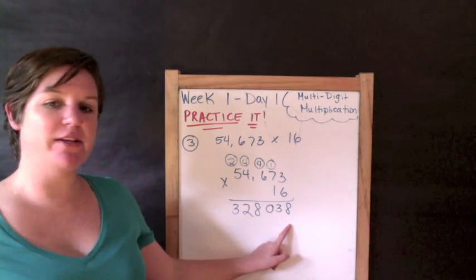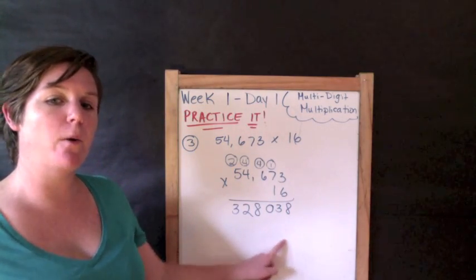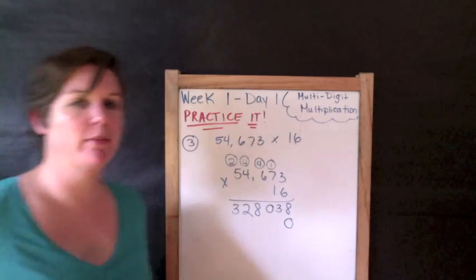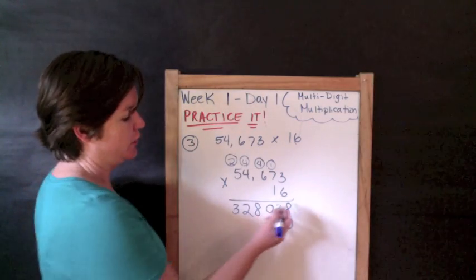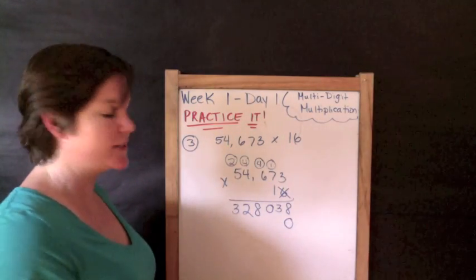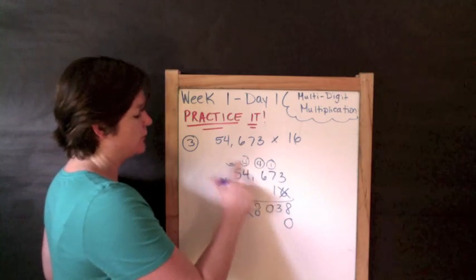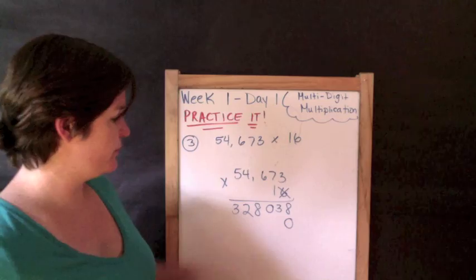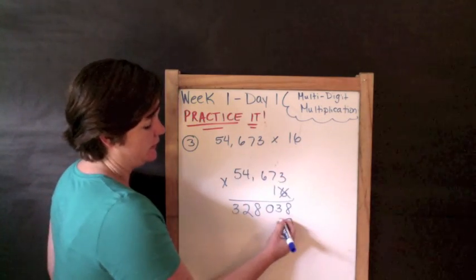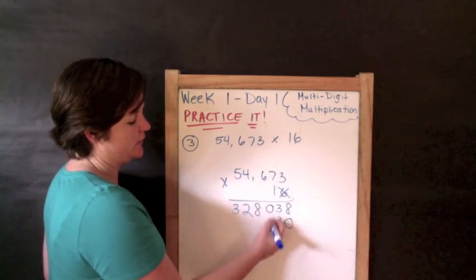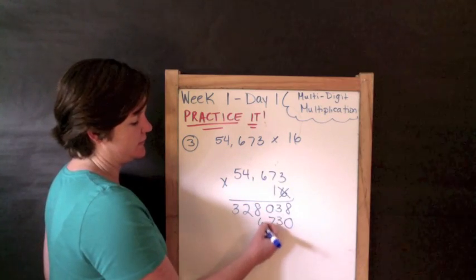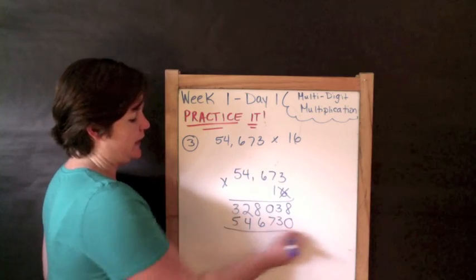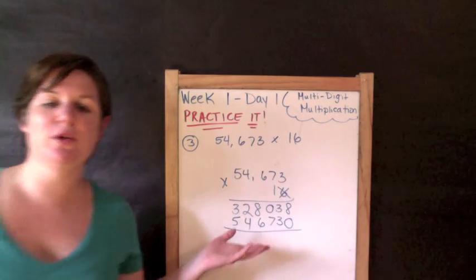Right down here, in the ones place in my second part, I'm going to put a big old zero, to hold the place. And I'm going to cross out my six. Everybody say, we're done with you six. And I'm going to get rid of my regroupies up here. Later regroupies. All right. Now I'm with my one. One times three is three. One times seven is seven. One times six is six. One times four is four. One times five is five. And now what do I do with these two lovely numbers?